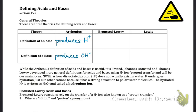The Arrhenius theory is very useful and many people are familiar with it, but it doesn't cover everything. As we saw from the lab, something like ammonia, NH₃, behaves as a base but doesn't contain any hydroxide ions. So it doesn't fit the Arrhenius theory, and our theories had to be expanded to cover other substances.